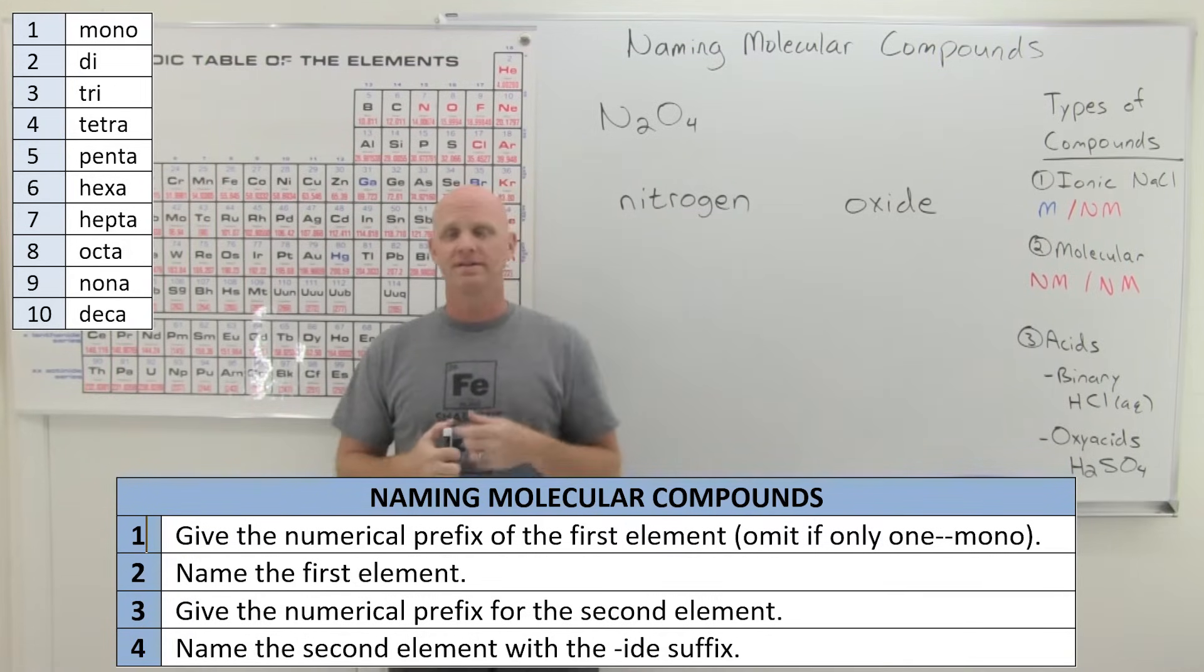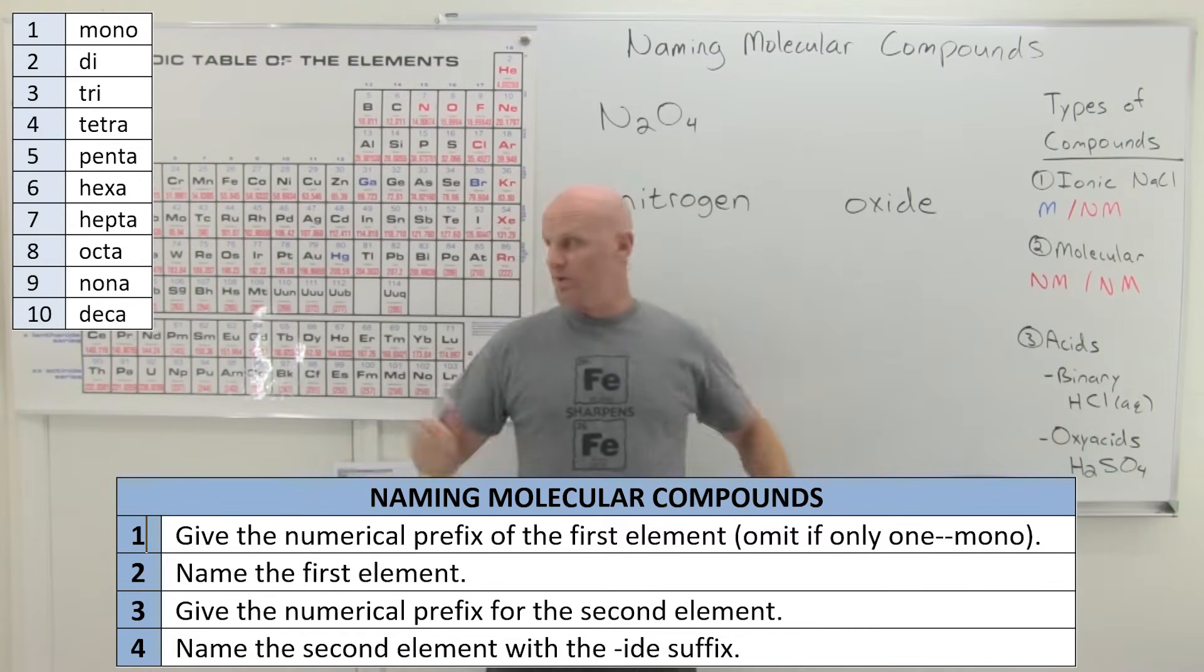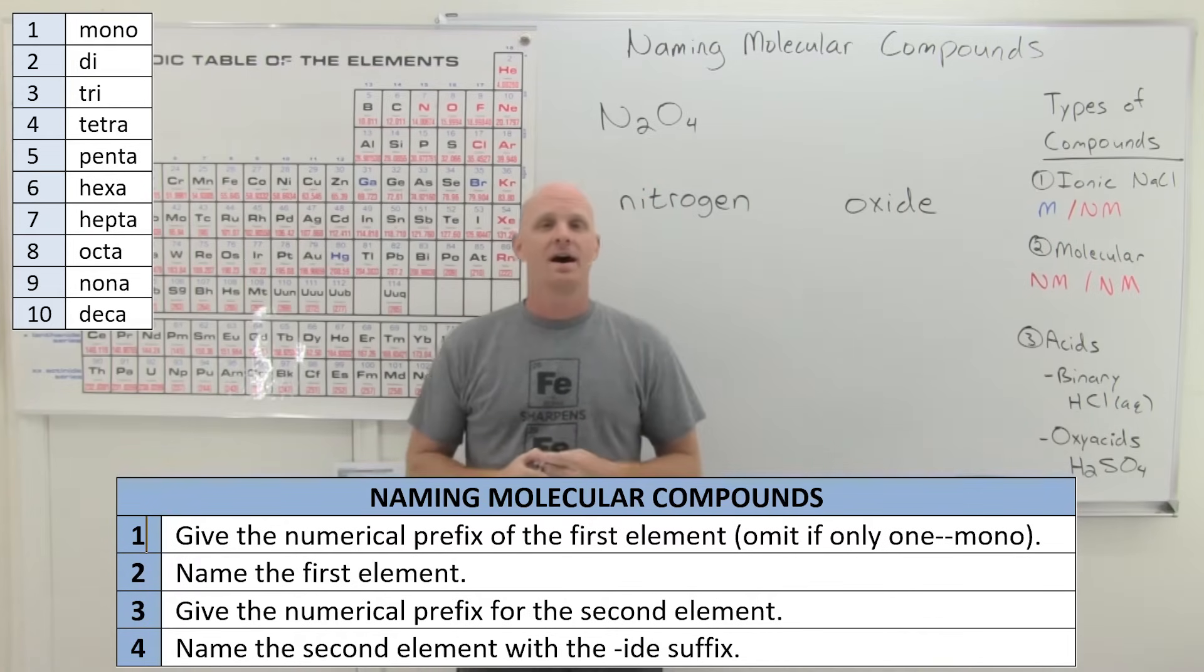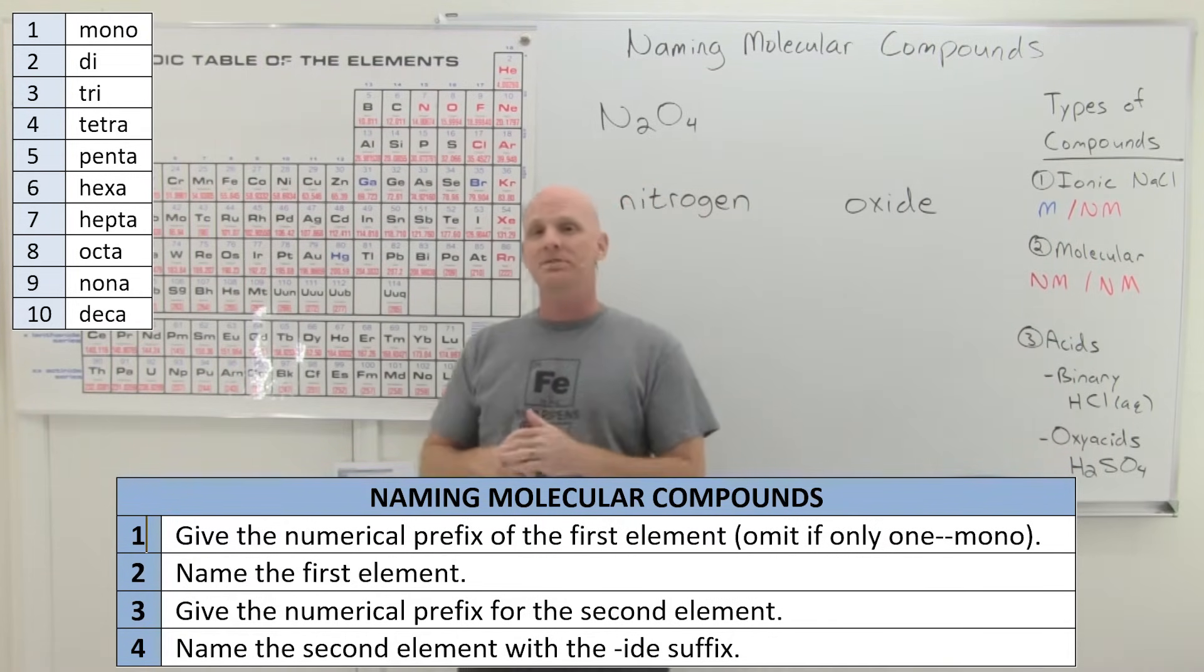And so you've got mono for 1 and di for 2, so on and so forth. And I'll put that list right up on the board here. That's on the study guides here. And so we've got mono, di, tri, tetra, penta, hexa, hepta, octa, nana, and deca.